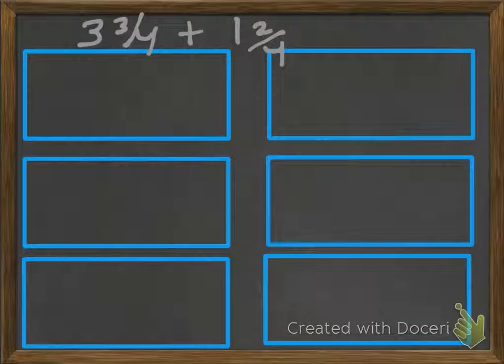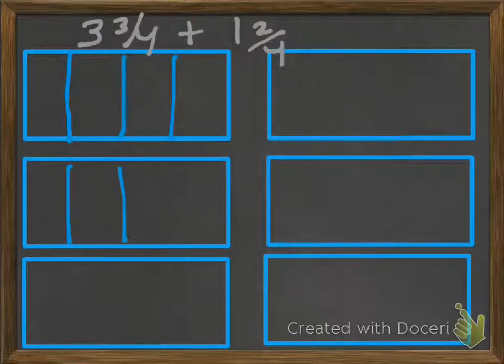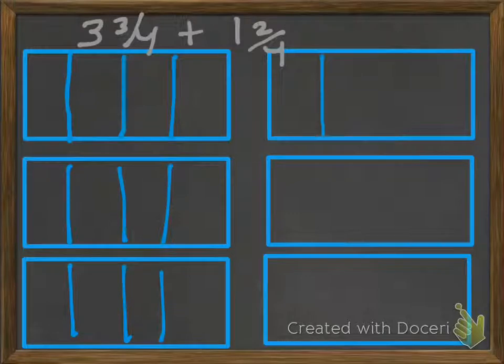What we can do is set up our model and kind of go from there. So we went ahead and divided this into fourths, all of these into fourths, and it makes it a lot easier just to see it, have a visual representation of everything.